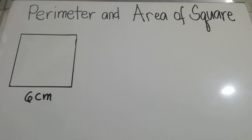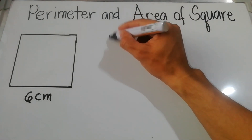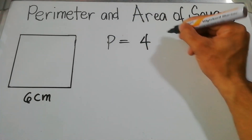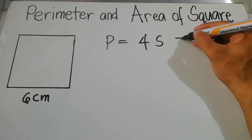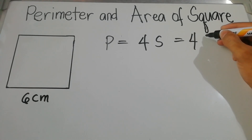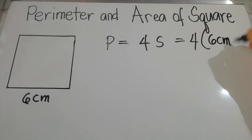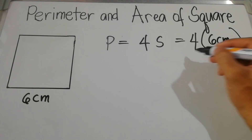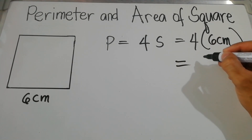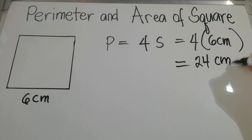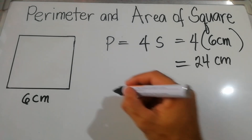Let us have example number 2: the side is equal to 6 centimeters. Without writing the other measurements, all sides of the square are equal to 6 centimeters. Therefore, the perimeter of the square is equal to 4 times s, which is 4 times 6 centimeters.